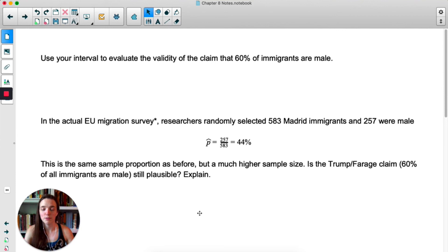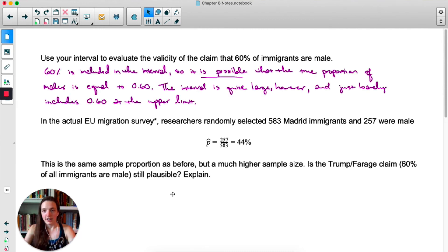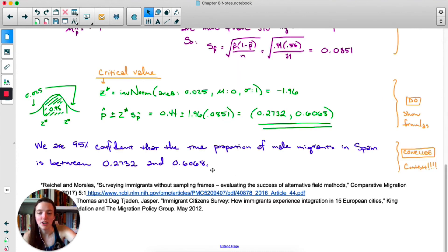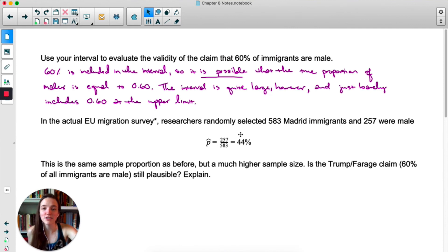Okay, so now we can actually answer the question. Use the interval to evaluate the validity of the claim that 60% of immigrants are male. Take a moment and pause the video and see if you can answer this question yourself. Alright, 60% is included in that interval. So it is possible that the true proportion of males is equal to 0.6. What we stated in this problem was that we're 95% confident that the true proportion is somewhere here, between 27% and 60.68%. So 60% is there. Barely, but it's there. It's included in the interval, so it is possible.